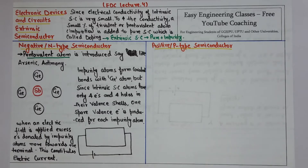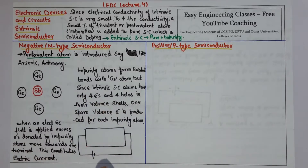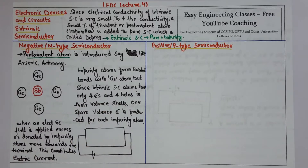The four intrinsic and four impurity electrons form covalent bonds, but one valence electron from the impurity is left over. So if you add the impurity, you will get a lot of free electrons, which greatly increases the conductivity.